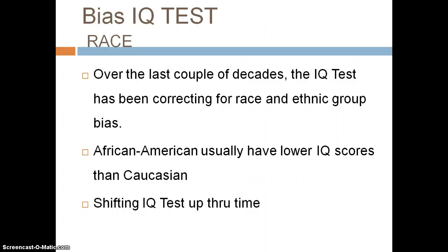Bias on the IQ — race. Race is a key part. A lot of people who have studied IQ over the years have noticed that African Americans usually score lower on the IQ test than Caucasians. What they have been doing is skewing the IQ test towards the African American lifestyle, because African Americans and Caucasians use different words in different parts of the country. So that has also been skewing the IQ test over time.